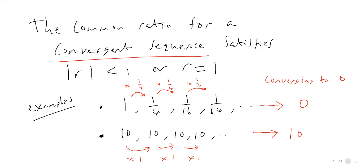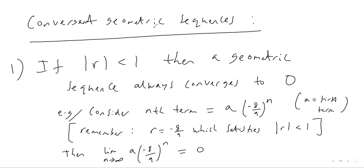The key point is that if the common ratio of a geometric sequence has modulus less than one, the sequence always converges to zero. So ratios like 1/2, −1/2, 1/3, or −1/3 will all produce sequences converging to zero. Consider the nth term a × (−8/9)^{n−1}: here r = −8/9, and |r| = 8/9 < 1, so this is a convergent geometric sequence.